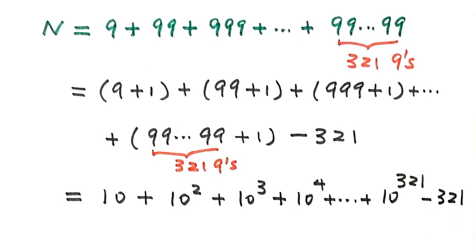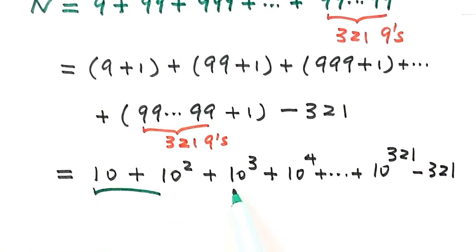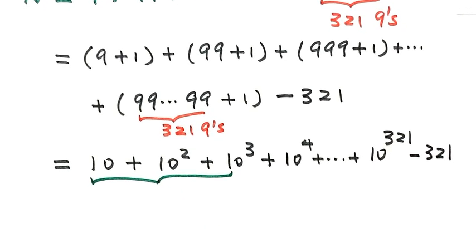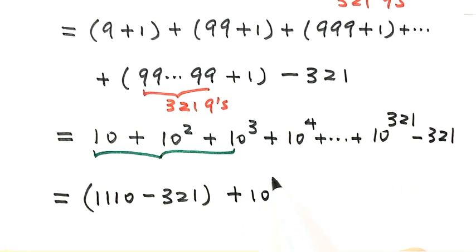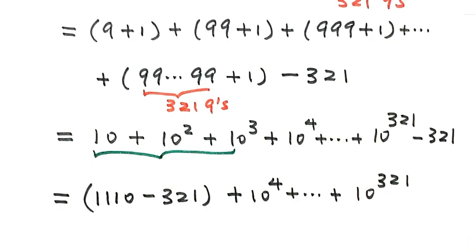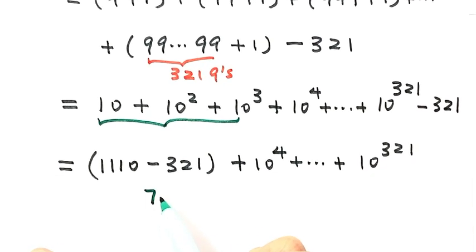Now consider the series: 10, 10 squared, 10 to the third, and so on up to 10 to the power of 321, minus 321. Subtracting 321 only influences the last four digits, which are determined by the sum of the first three terms: 10 plus 100 plus 1000 equals 1110. Then 1110 minus 321 equals 789.